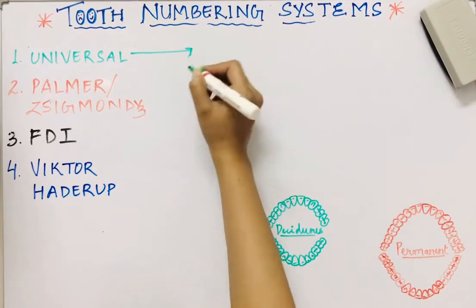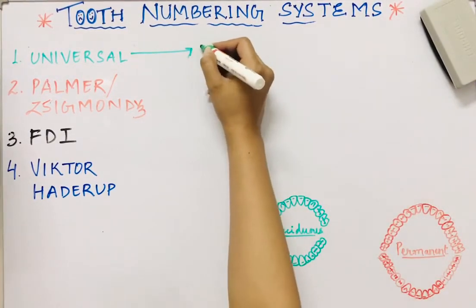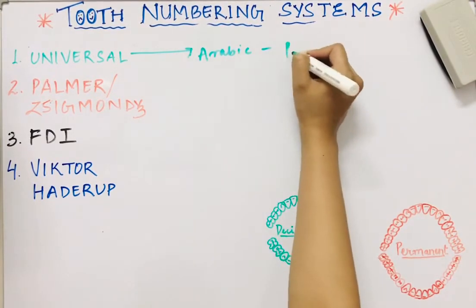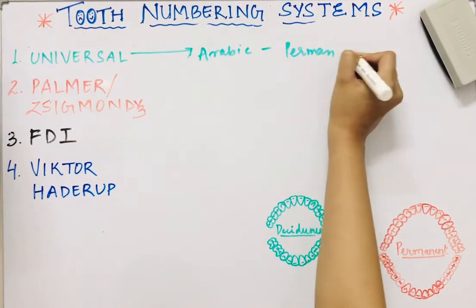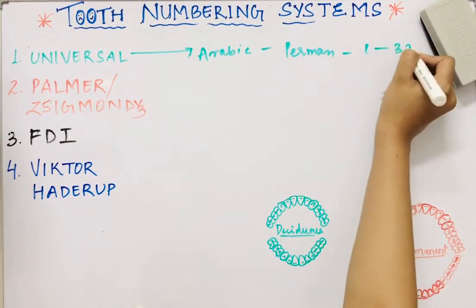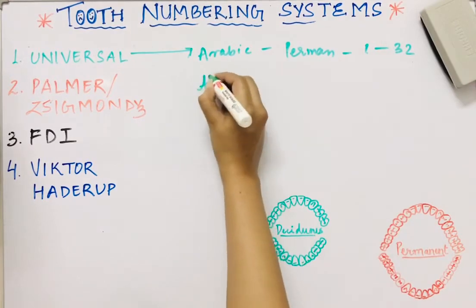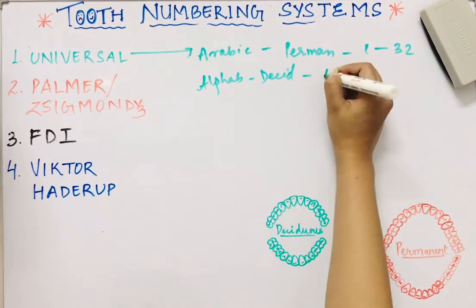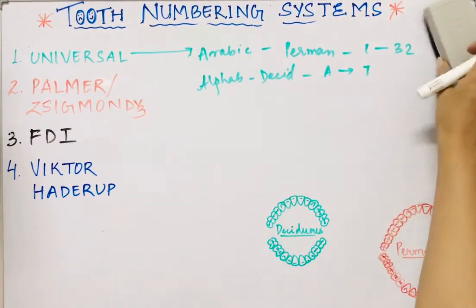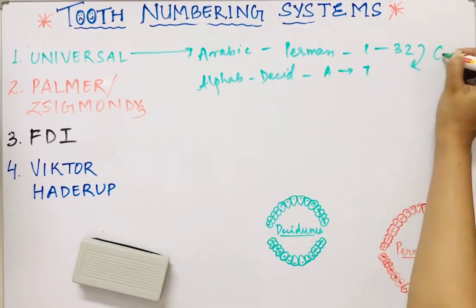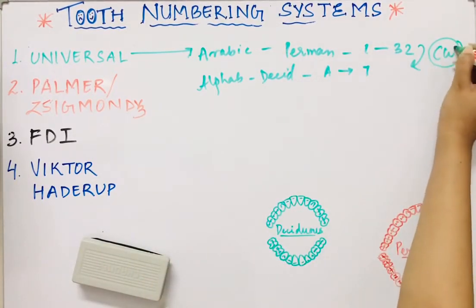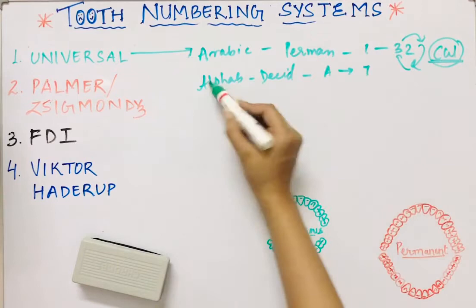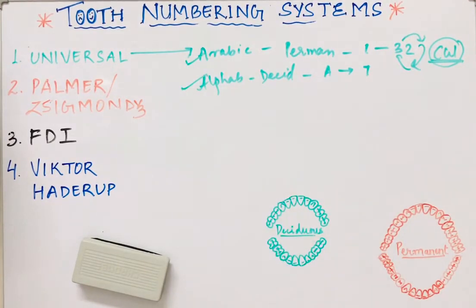In the Universal system, Arabic numbers are given to permanent dentition from 1 to 32, and alphabets are given to the deciduous dentition from A to T. After assigning these numbers or alphabets, we need to move clockwise across the dentition.